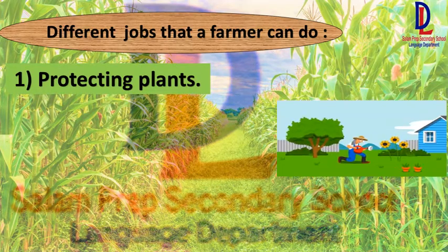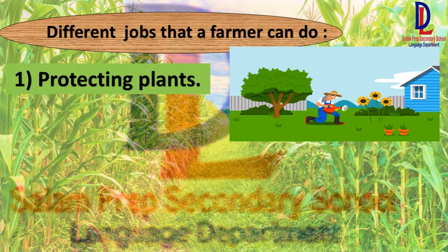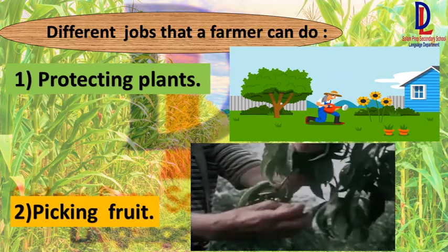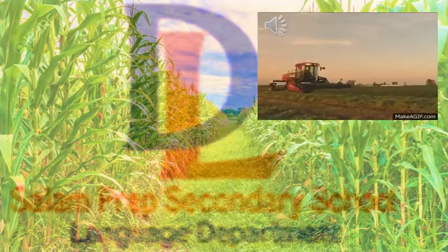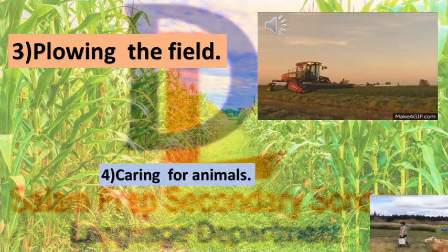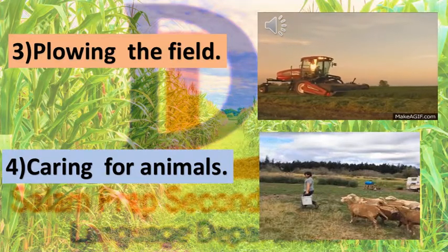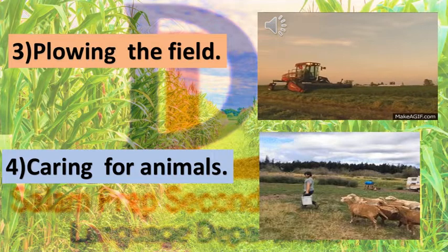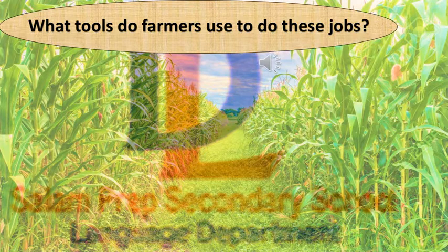Number one: protecting plants. Number two: picking fruits. Number three: plowing the field. Number four: caring for animals. These are the main jobs a farmer does every day.